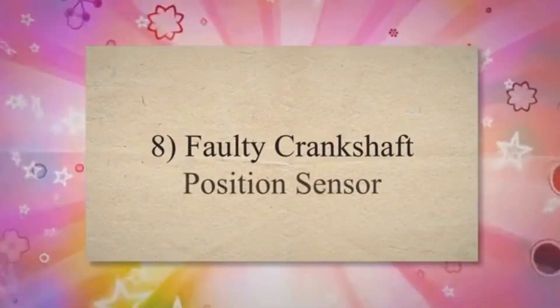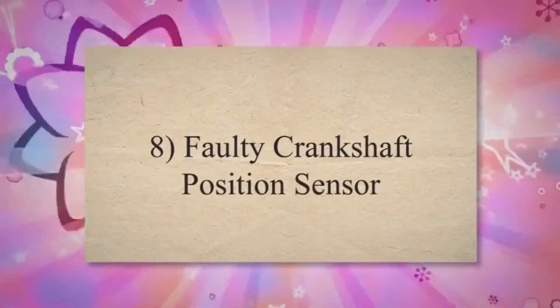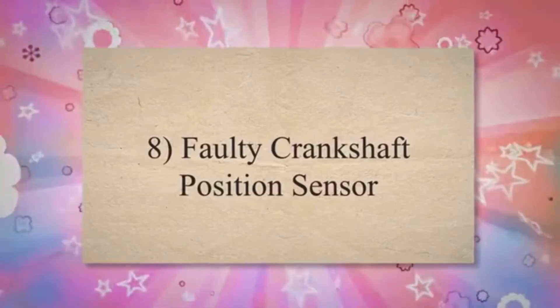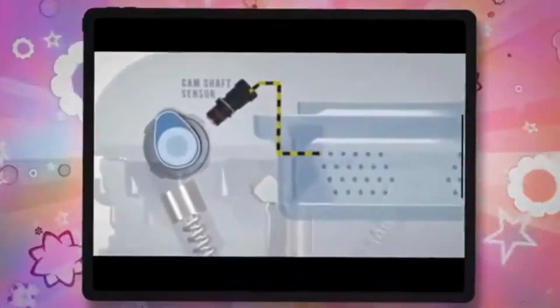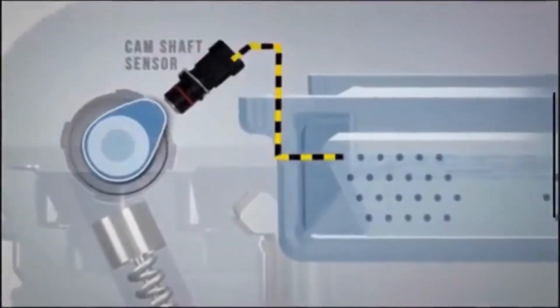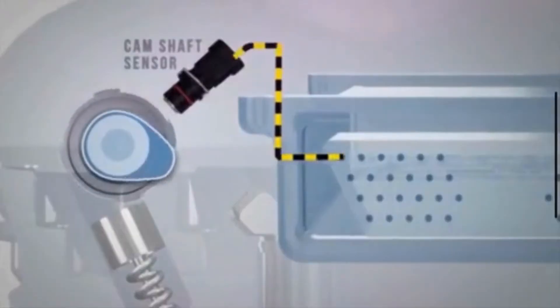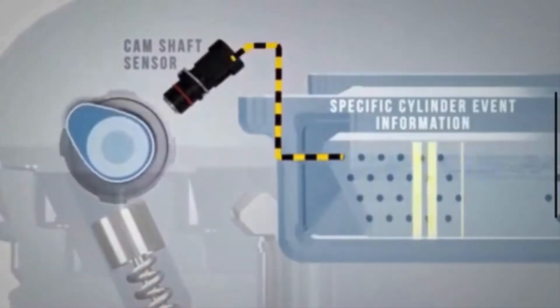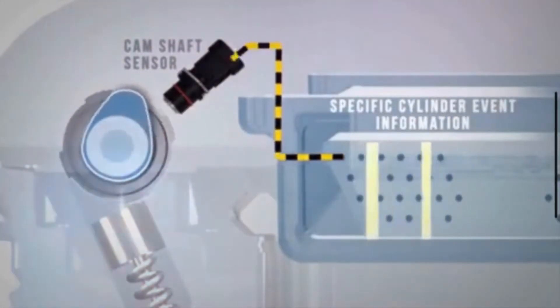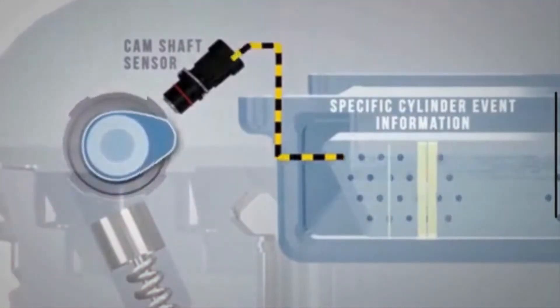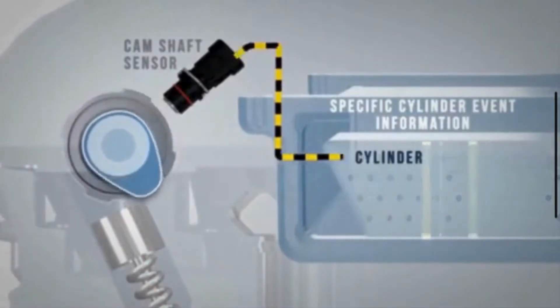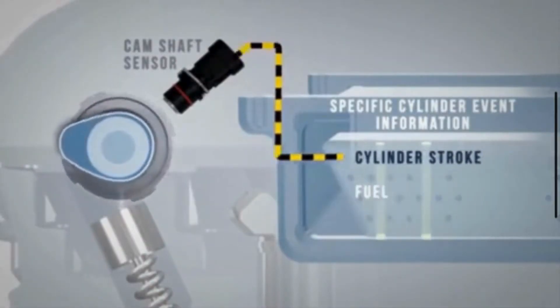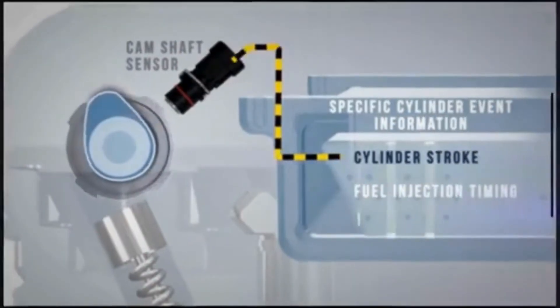8. Faulty Crankshaft Position Sensor. The crankshaft position sensor provides critical information to the engine control module about the position of the crankshaft. If it fails, the engine's computer may not know when to send the signal to start.